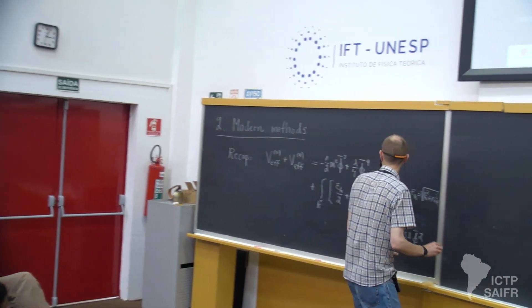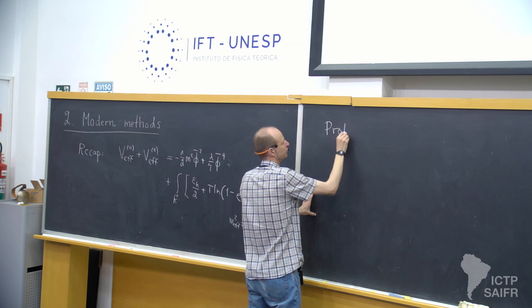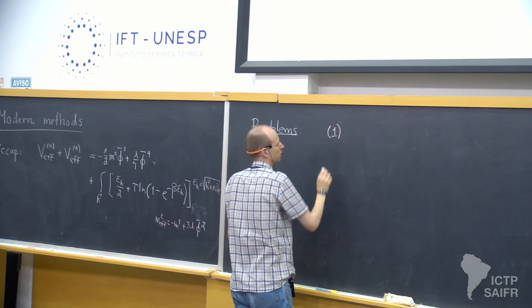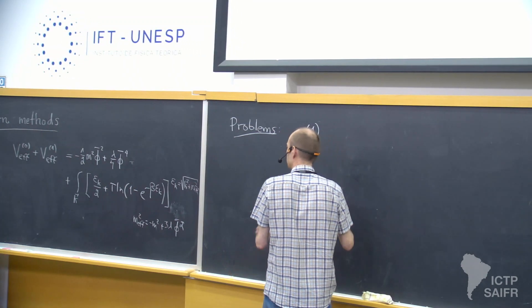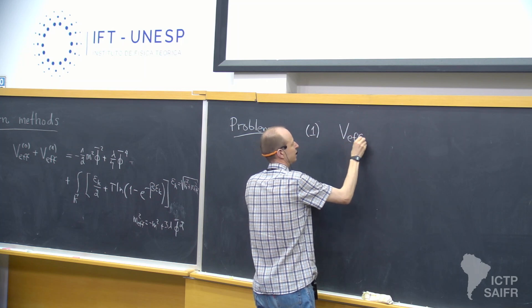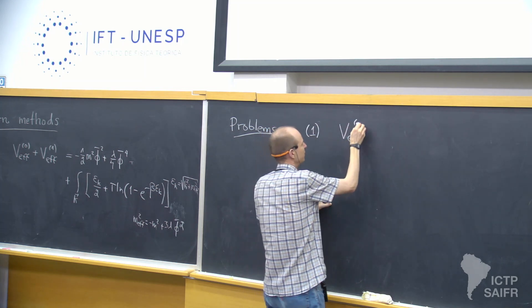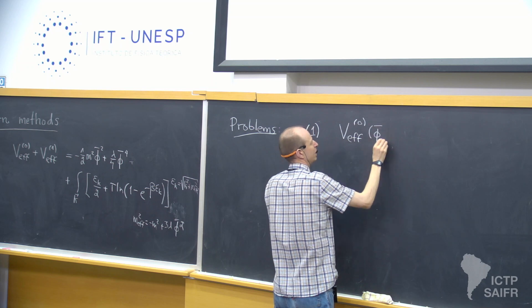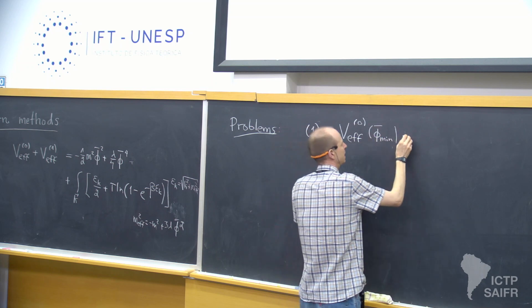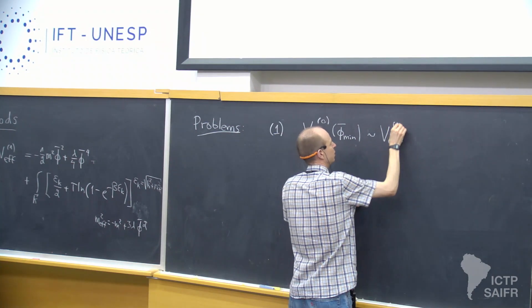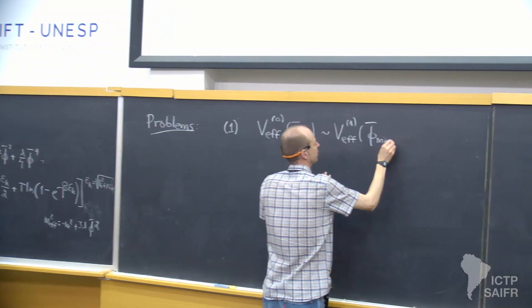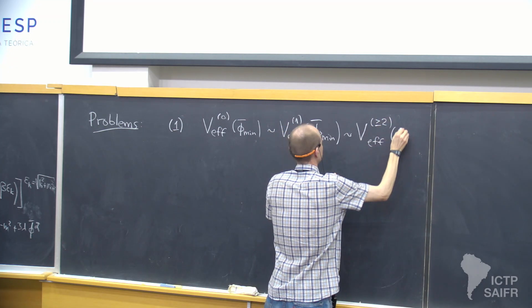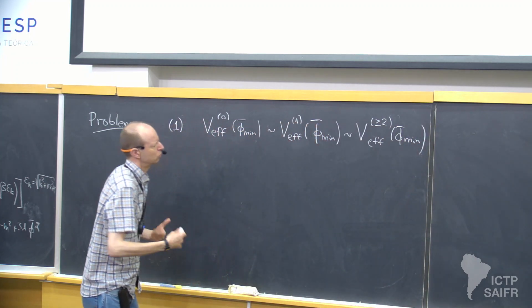So far so fine. However, this expression has problems of several types. One problem we discussed yesterday is that if we find a phase transition, the evidence is not necessarily convincing, because in the domain of phi-bar where we try to minimize the potential, the corrections from different orders can actually be of the same magnitude, and we would have to question the convergence.